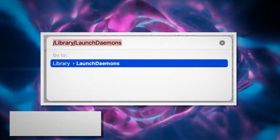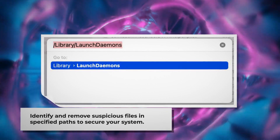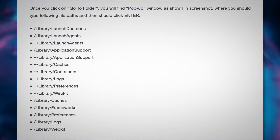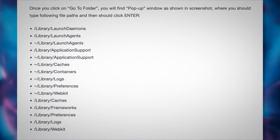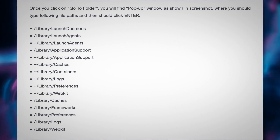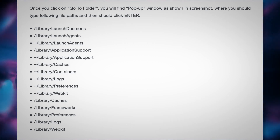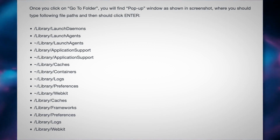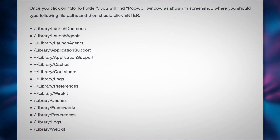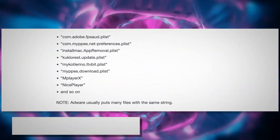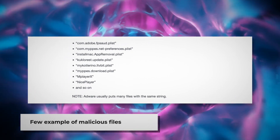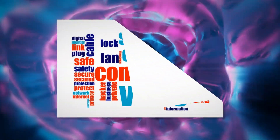Once you click on Go to Folder, a pop-up window will appear where you should type these file paths and then click Enter. Enter paths such as Library, Launch Daemons, Launch Agents, Application Support, and so on, as shown here. You should look for suspicious malicious files and move them to Trash. A few examples of such malicious files are shown here. Note: AdWare usually puts many files with the same string.